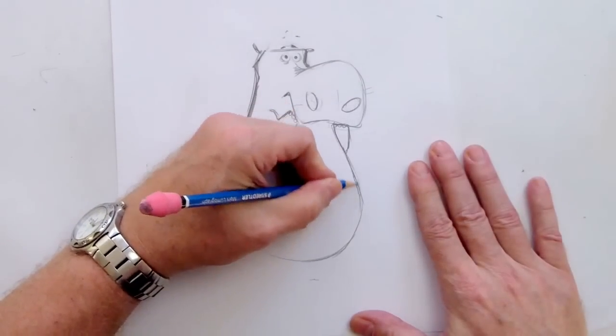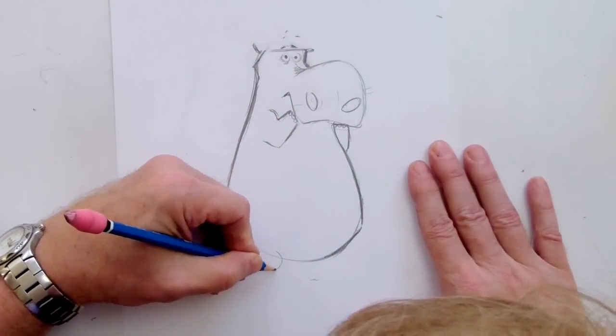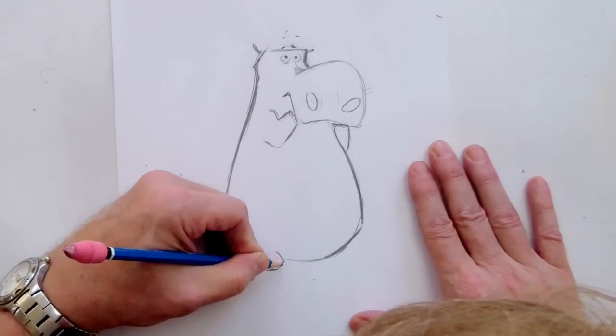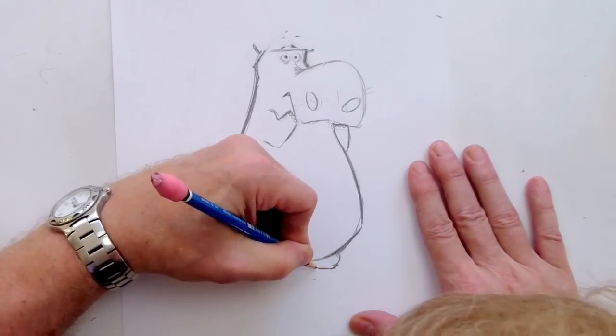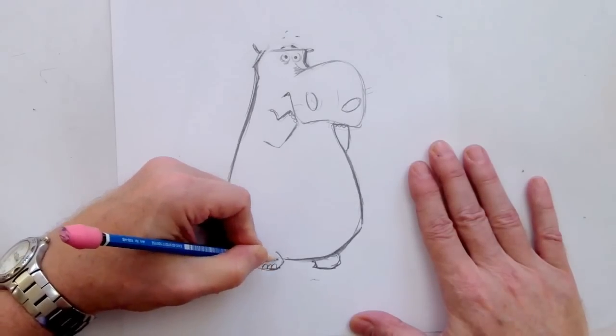And the legs would be very small. They are in hippos, we're going to even exaggerate it more, again to contrast with the big parts. Little tiny nails.